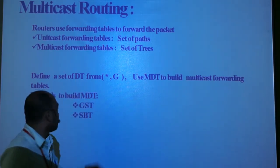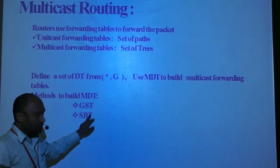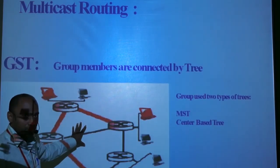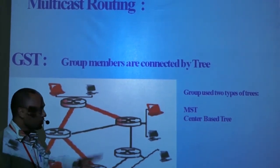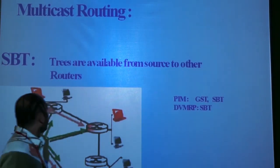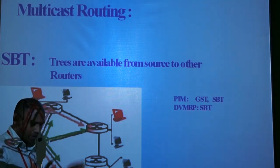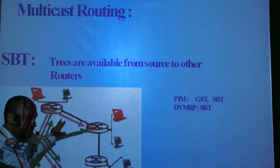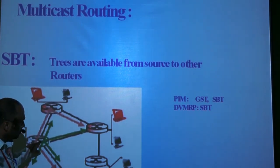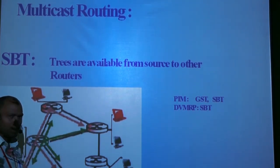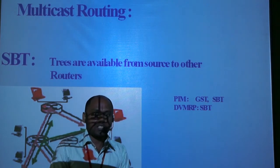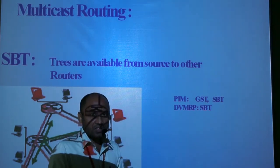There are two types of trees: GST, the group-shared tree, and SPT, the source-based tree. In a group-shared tree, all group members get connected to the tree, which takes either a minimum spanning tree shape or a center-based tree shape. In a source-based tree, from every source to the routers there is a separate tree formation, resulting in multiple trees. Routing protocols use either SPT or GST depending on the case.